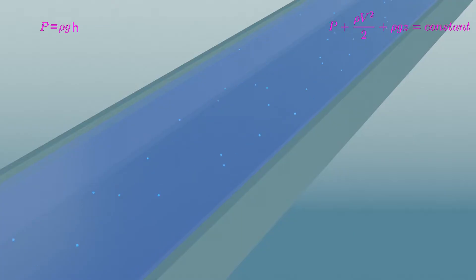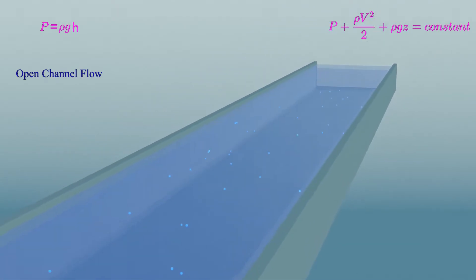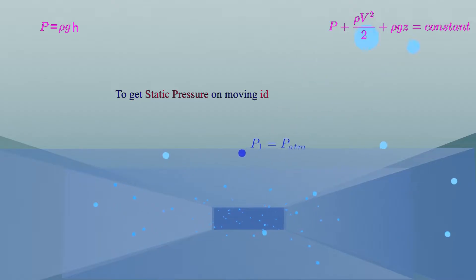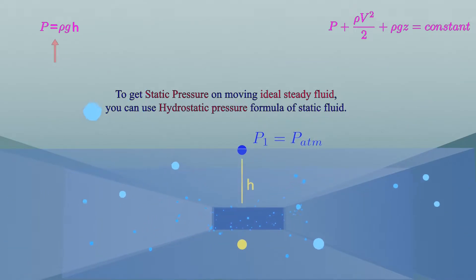If you consider an open channel flow having ideal fluid which is moving at constant velocity, and if P1 is the static pressure at point 1, then pressure below point 1 can be found by treating this moving fluid as static one. So static pressure at point 2 will be P2 equals P1 plus rho g h.